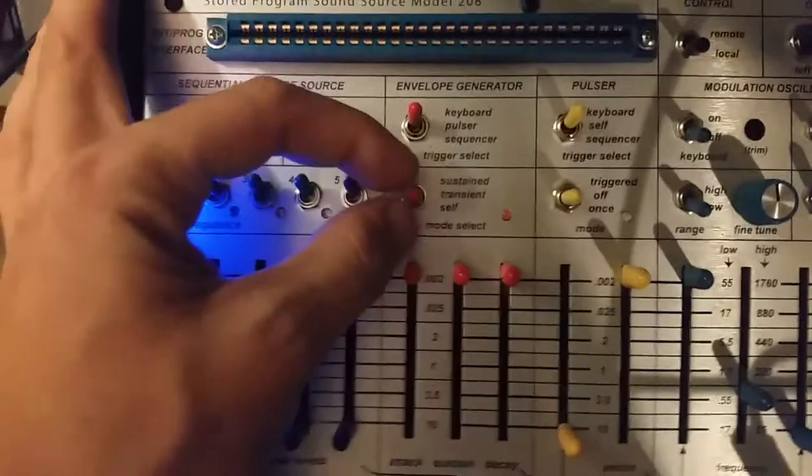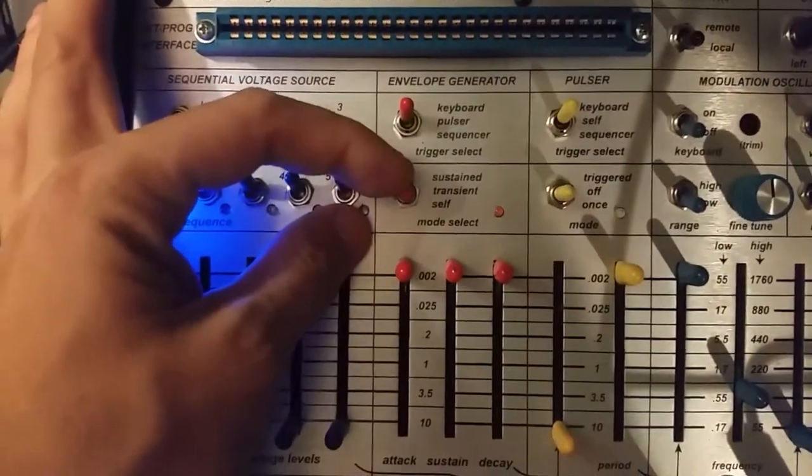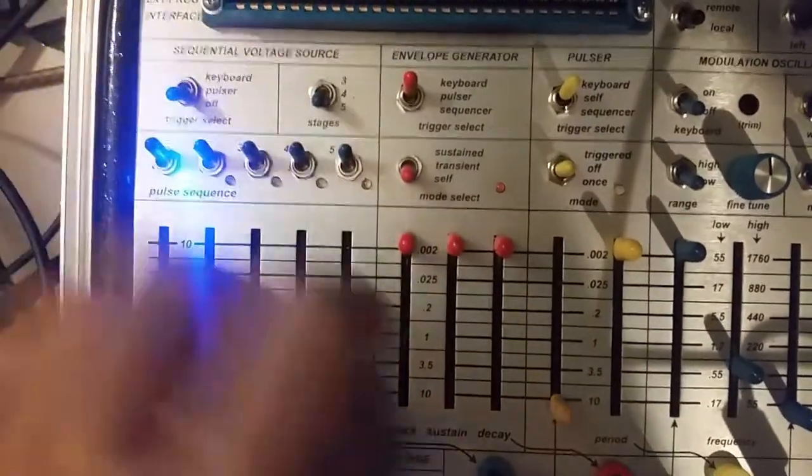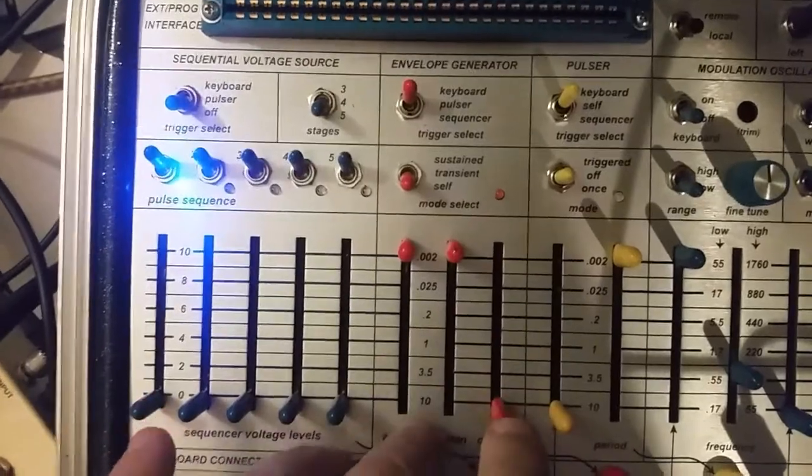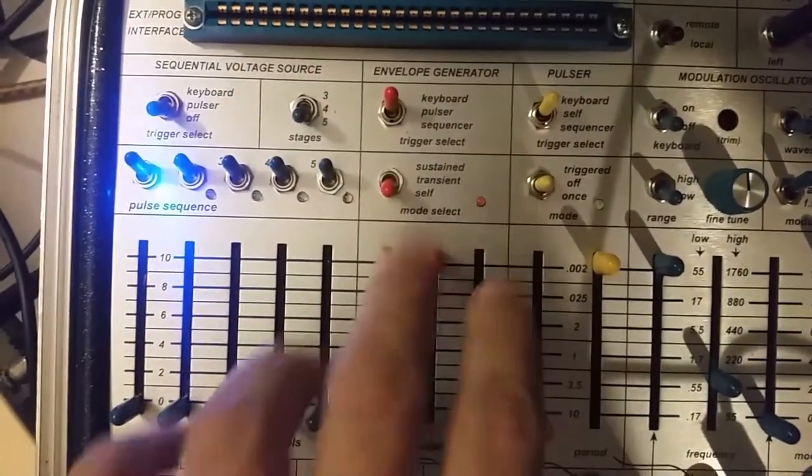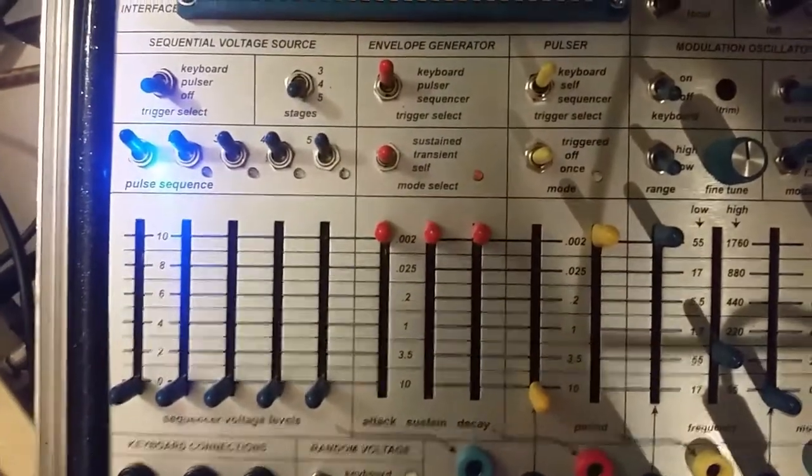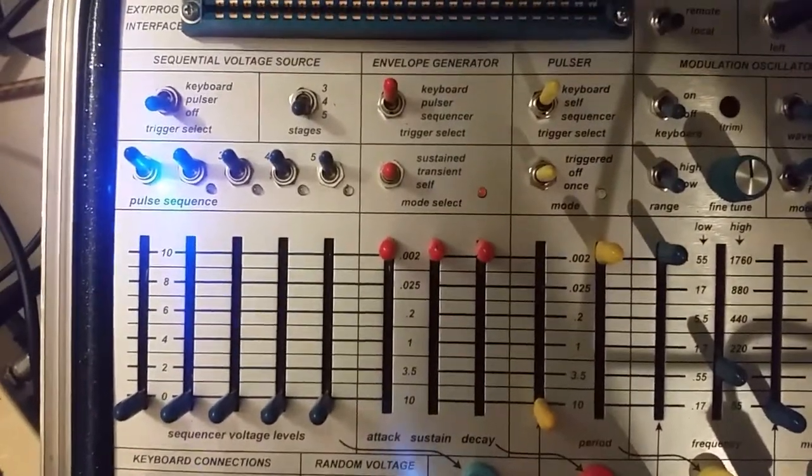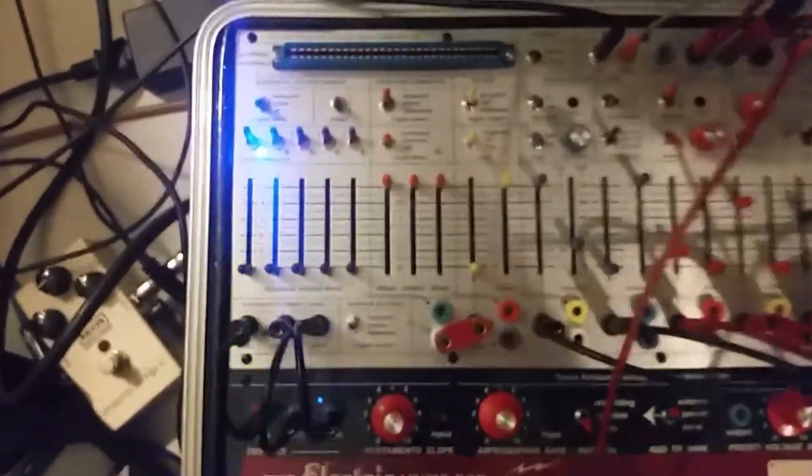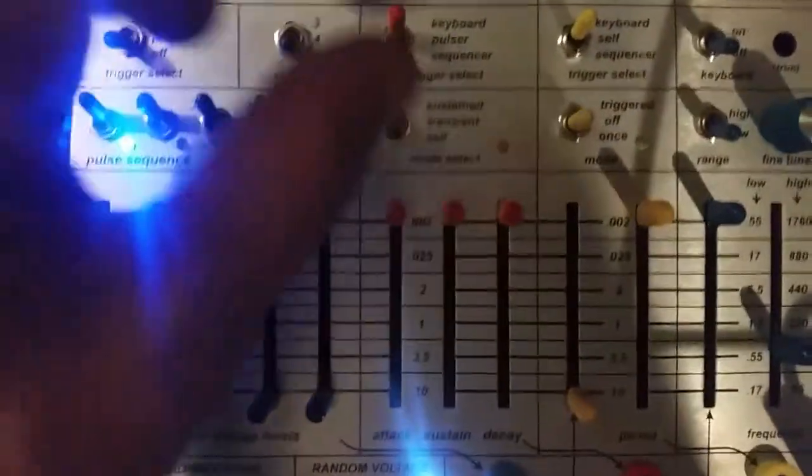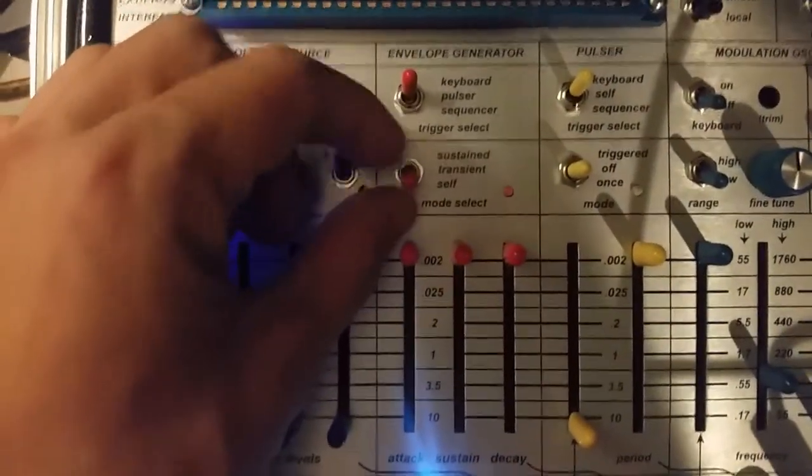So like with the Pulsar you'd think, well let's go ahead and put it into self, but we get nothing. Now I can go back to transient, fire from the keyboard like this, but we try to go to self and we get nothing.